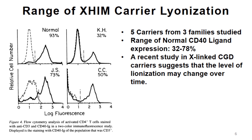This is the flow cytometry test. A normal individual who does not have a mutation — unstimulated cells, then stimulated — 93% of the cells expressed CD40 ligand. Here's one of the carrier females at 50%, right there in the middle. On one end of the spectrum was the lowest in this study, which was 32%, and the highest, which was 73%. So among these five female carriers, it ranged from 32 to 73%. Nobody was sort of extreme in this particular study.